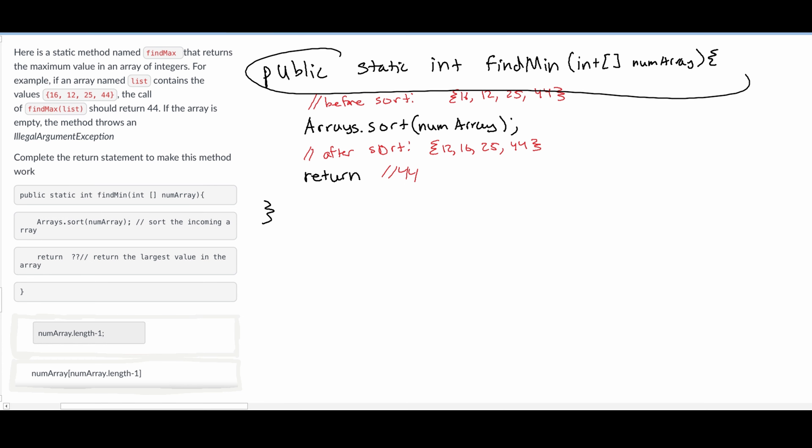So we have our method header here. Before we sort it, our list is going to look like this. We're going to do Arrays.sort, we pass in the array, and this is a predefined array method. After we sort our array, it will look like this.